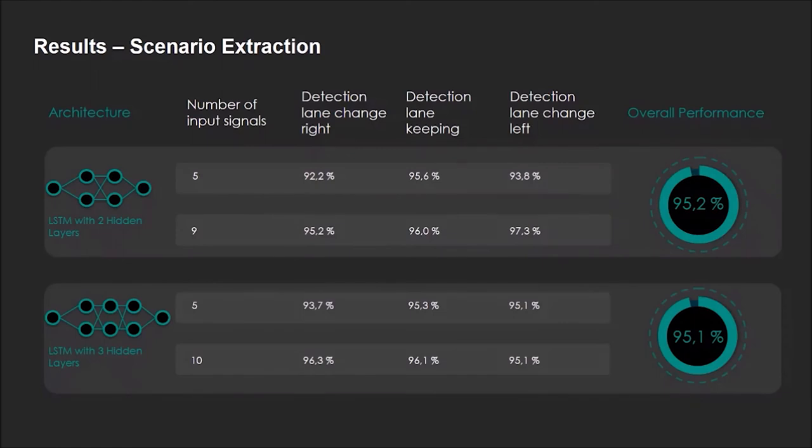At the end, we could show that the networks perform best when two to three hidden layers were used. We achieved an overall classification accuracy of more than 95% when having nine to ten input signals. If just five signals were available, we achieved about two percentage points less in accuracy.